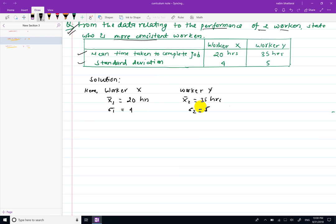Now coefficient of variation. CV for Worker X equals sigma 1 over X1-bar times 100, which is 4 over 20 times 100.